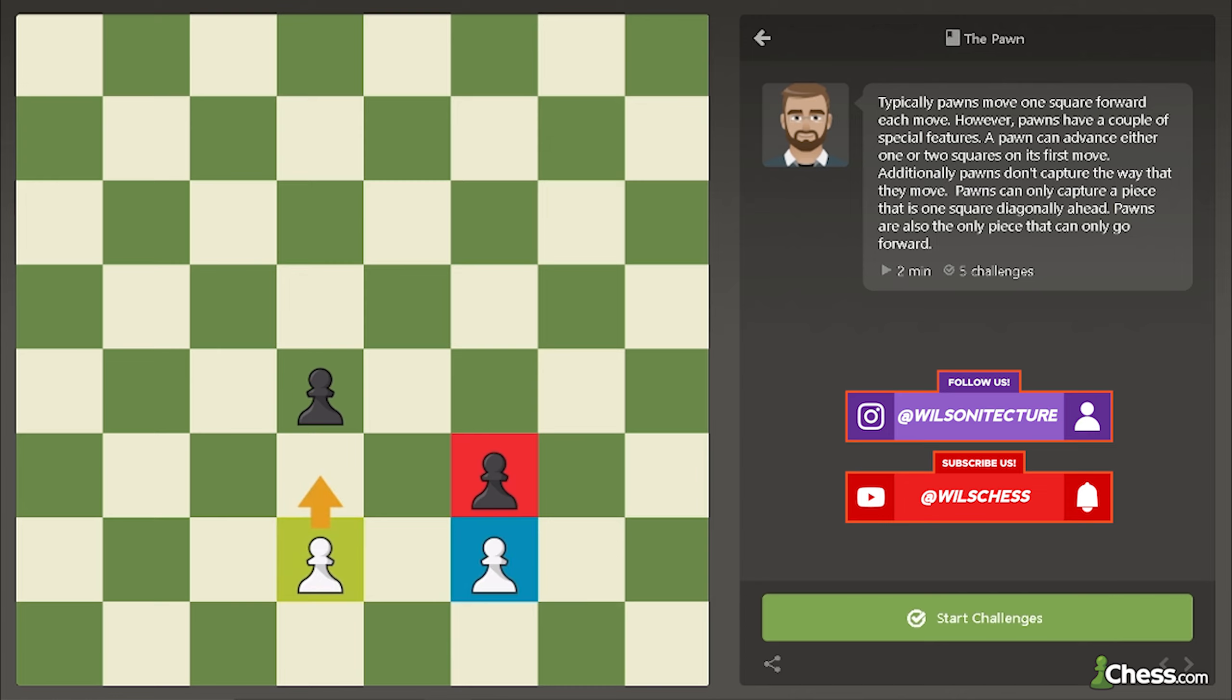White now has the option to move this pawn up one square. Notice this pawn cannot move two squares forward because the black pawn blocks it. Now it's your turn to practice using the pawns.